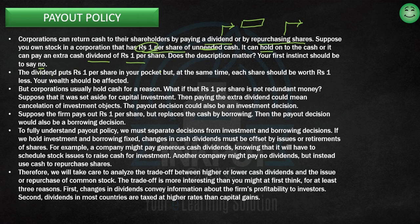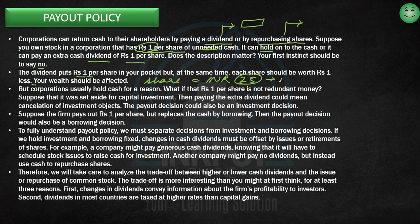Imagine how it happens. If the company gives a dividend and puts that one rupee in your pocket, your share price will get one rupee less. For example, if a share price is 25 rupees today, and the company releases a dividend worth one rupee, then in the market tomorrow it will be worth 24 rupees, because that one rupee return has already been paid out.